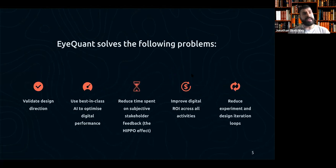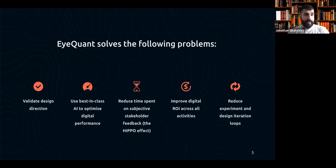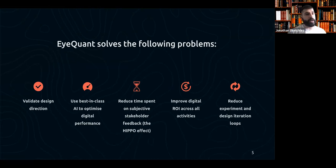On top of capturing attention — what do we actually help you do? We help validate design directions. If you've ever been in a meeting debating the color of a button, where someone doesn't like red and another doesn't like blue, we help you validate the direction you're going. That's going to be a big focus of today, with the frameworks and the idea of experimentation. We also help you use our best-in-class AI to optimize digital performance.